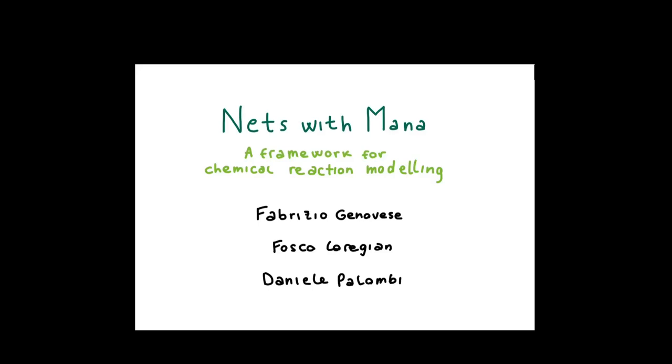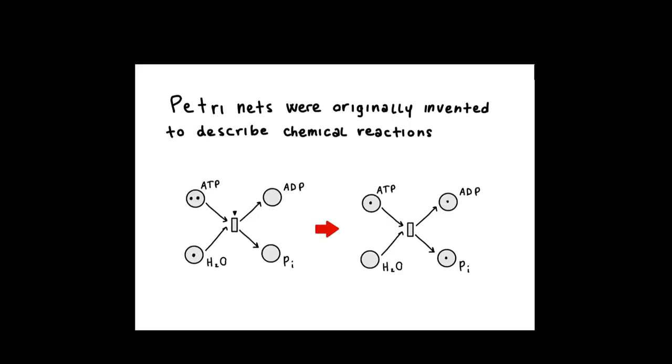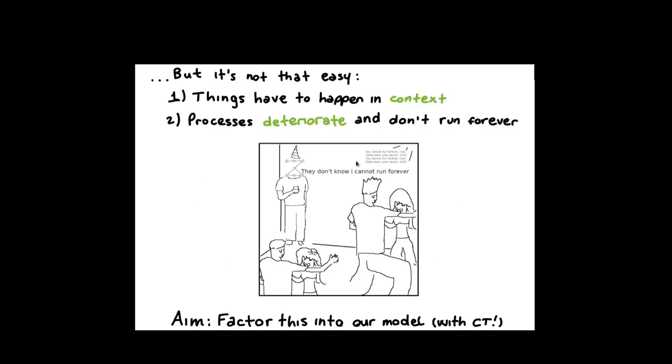NETS-WIMANA. What is NETS-WIMANA? Let's start with something that many people here know: Petri nets, a very famous model of computation that were originally invented to model chemical reactions, even if they became very important also in computer science. The idea is that if you think about Petri nets as chemical reactions, you may be missing something, and that is that especially in biochemical contexts, your actual structure that makes the reaction possible can break down over time. Basically, in a real context, sometimes processes deteriorate and do not run forever. Our idea was basically factoring this into our model.